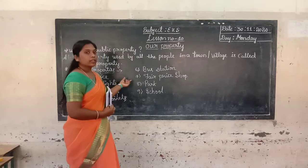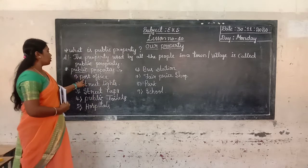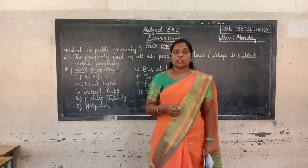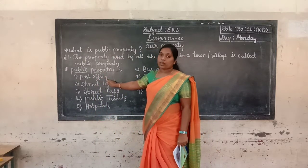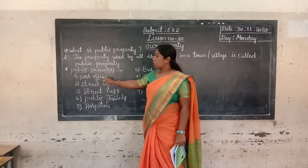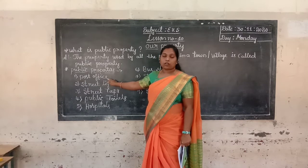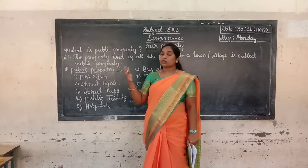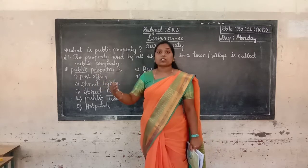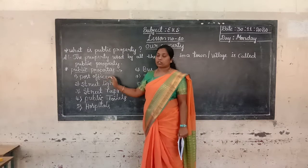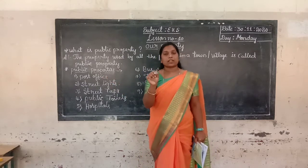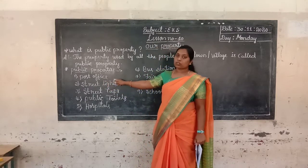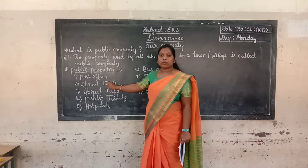Now let us go to learn one by one. First we go to post office. Post office is very important in our life. How is it useful to us? Post office is very useful to us — for example, we send messages to our relatives or friends by post letters. We find post letters, post box, and postman in a post office. This is the use of post office; it is also one of the public properties.